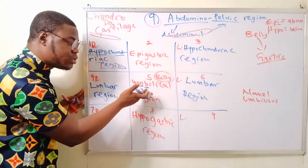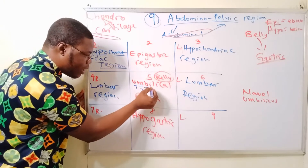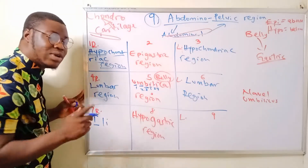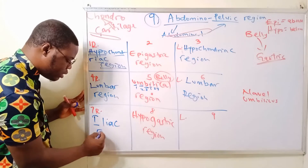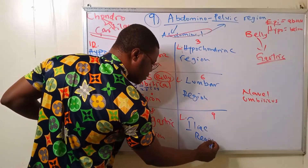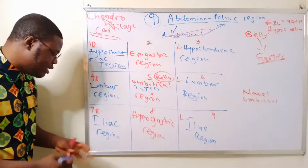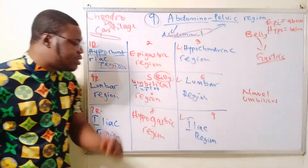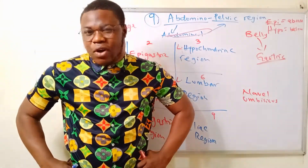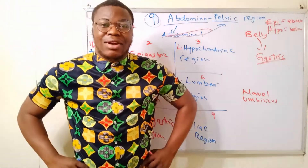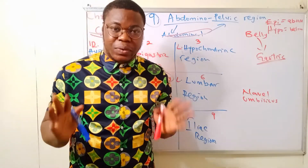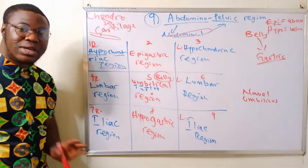For the lower lateral regions, take the next three letters from 'umbilical' — I-L-I — to get 'ili,' giving you the right iliac region and the left iliac region. Anatomically, they are called the iliac regions because the rim of the pelvic cavity — the superior part — is called the iliac crest, and these regions lie very close to it.